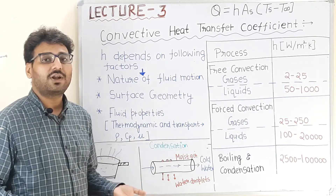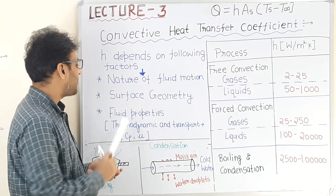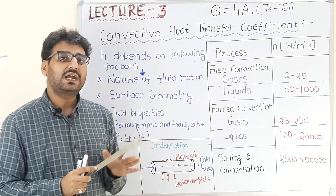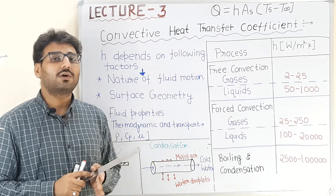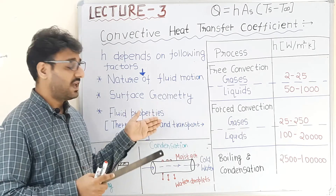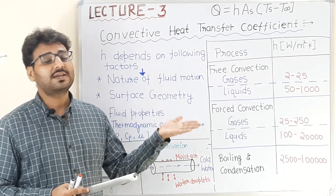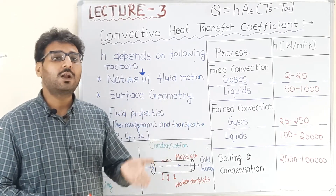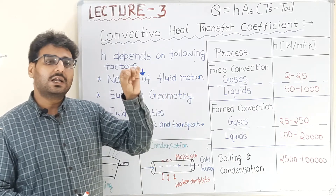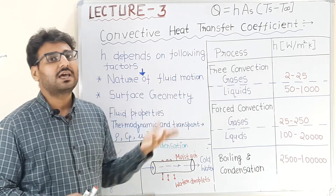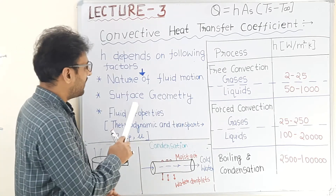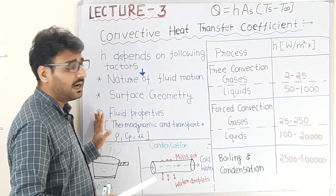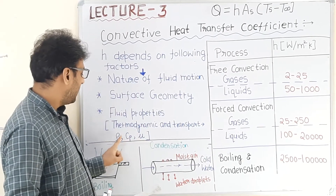Higher fluid velocity means higher value of h. The second factor is surface geometry. Surface geometry should be such that it does not upset the fluid flow; the surface and the fluid should always be in contact with each other. If the surface geometry is very complex and fluid is not able to enter the fine details of the surface, then the heat transfer rate between the surface and the fluid is slow, and h becomes less.